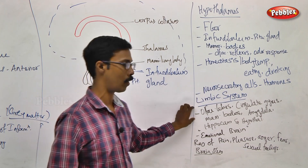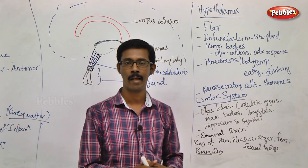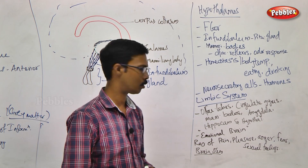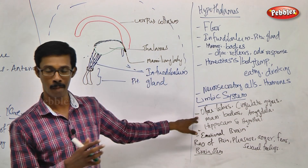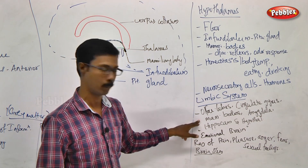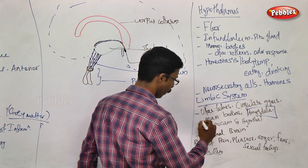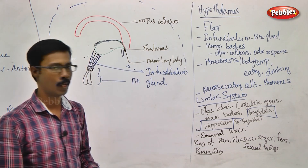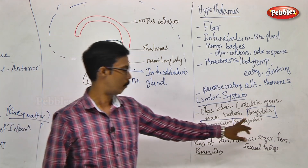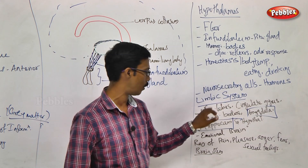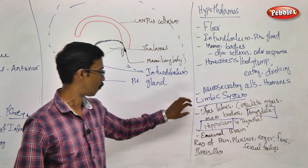The limbic system includes the olfactory lobes, the cingulate gyrus, the corpus callosum layer arrangement, the mammillary bodies from the hypothalamus — these are very major structures. It also includes the Amygdala and the Hippocampus. Apart from amygdala and hippocampus, we have hypothalamus mammillary bodies, cingulate gyrus, and olfactory lobes — all together they form the system called the limbic system.